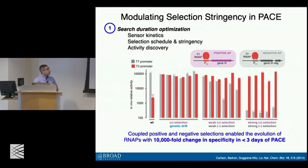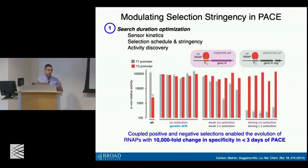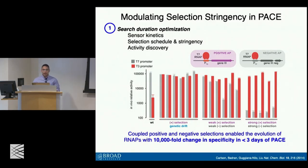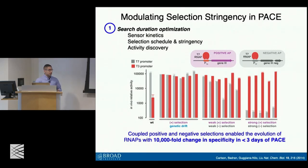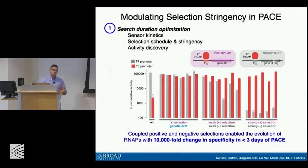Throughout the talk I've included key considerations that we as synthetic biologists think about when designing experiments. For example, what does the sensor actually look like? How much time does an RNA polymerase need to initiate transcription on a promoter? How does that affect the feasibility or strength of our selection? How we modulate selection stringency, or how we push the selection to discover novel activities — these are all very important considerations. This is the end product of a lot of that analysis, which required the optimization of these various parameters. As we've progressed through various PACE selections, we now have a better understanding of which parameters to tune to push a given biomolecule in a given direction.